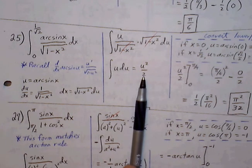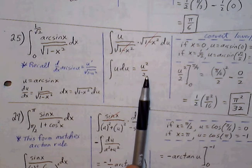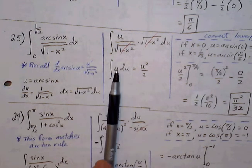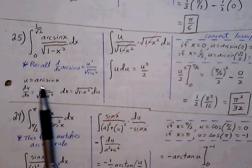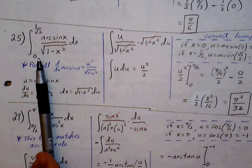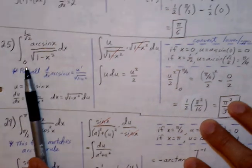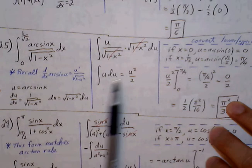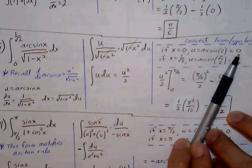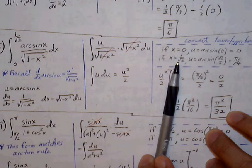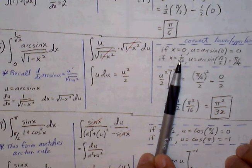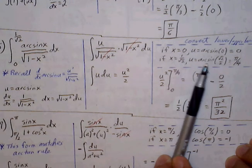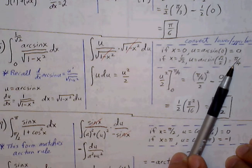Now we need to evaluate between our upper and lower bounds. Since we did u-substitution, we convert our x bounds to u values using u = arctan(x). Plug in 0 for x: arctan(0) = 0. If x = 1/√2, which is the same as √2/2, then arcsin(√2/2) — when is sine equal to √2/2? That's at π/4. So our new lower bound is 0 and our new upper bound is π/4.